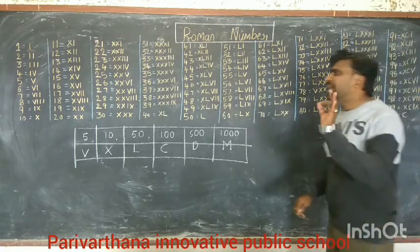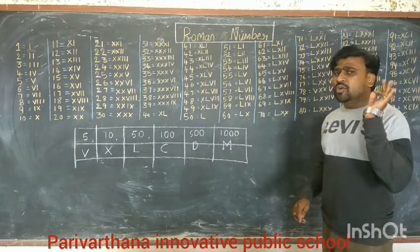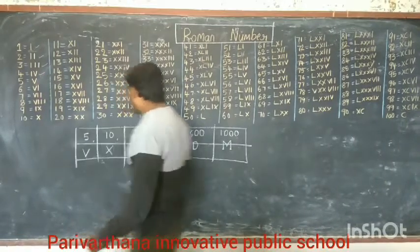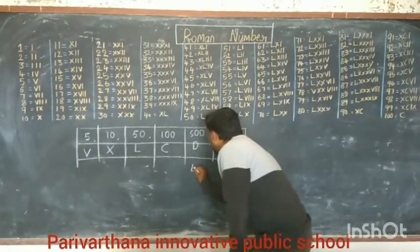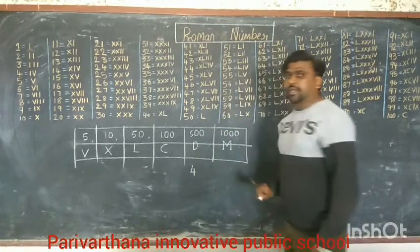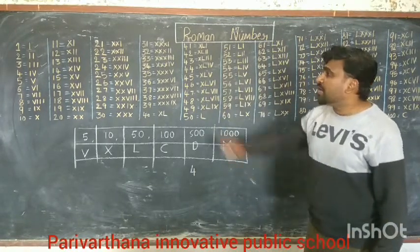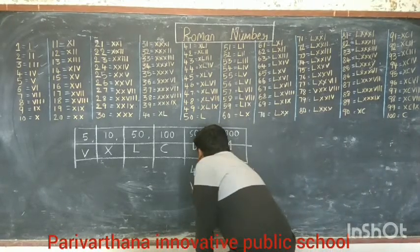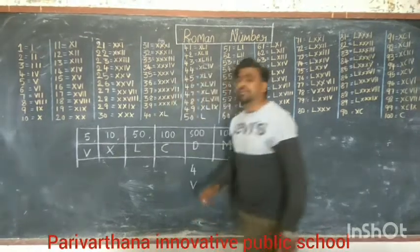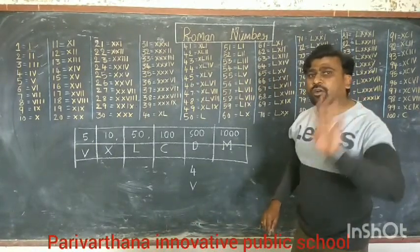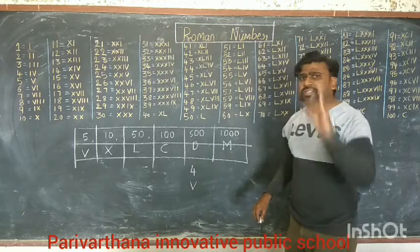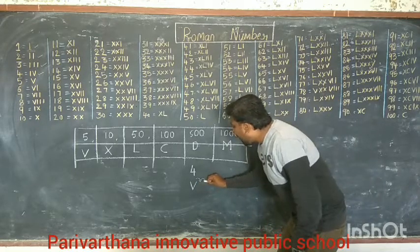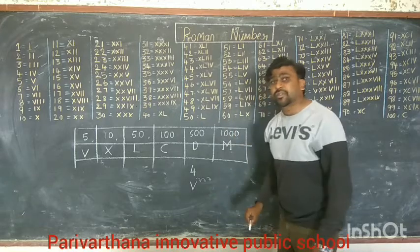I will give you one very simple idea to write Roman numbers. For example, this is 4. We need to observe: V is 5. We have to represent 4, not 5. In Roman numbers, we use addition. For example, 5 plus 1 is 6.